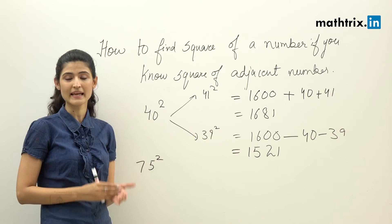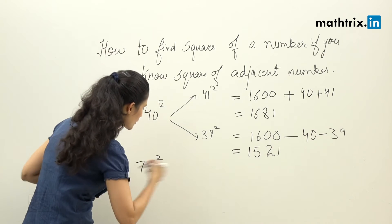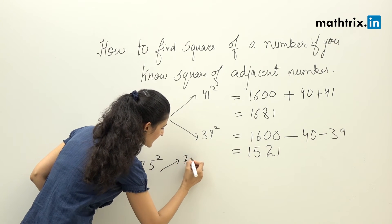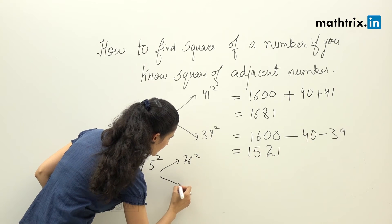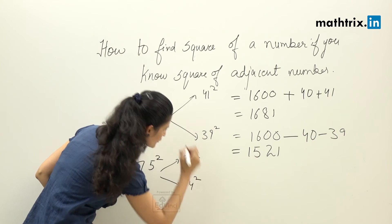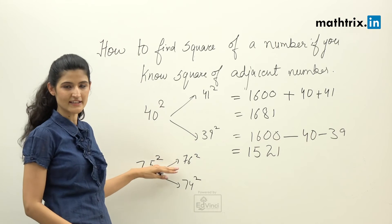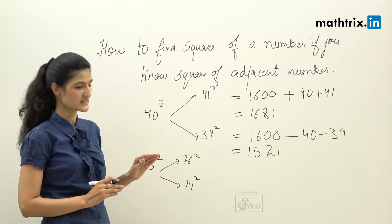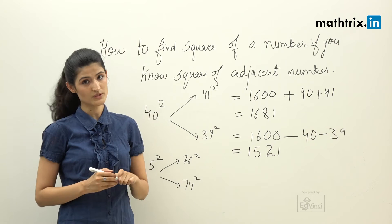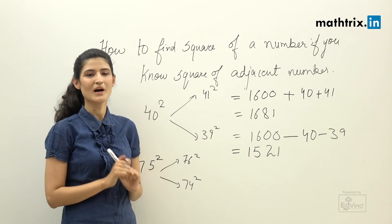So let's move to another example where we already know 75 square and we have to calculate 74 square and 76 square. The answer for 76 square is 5776, and answer for 74 square is 5476.